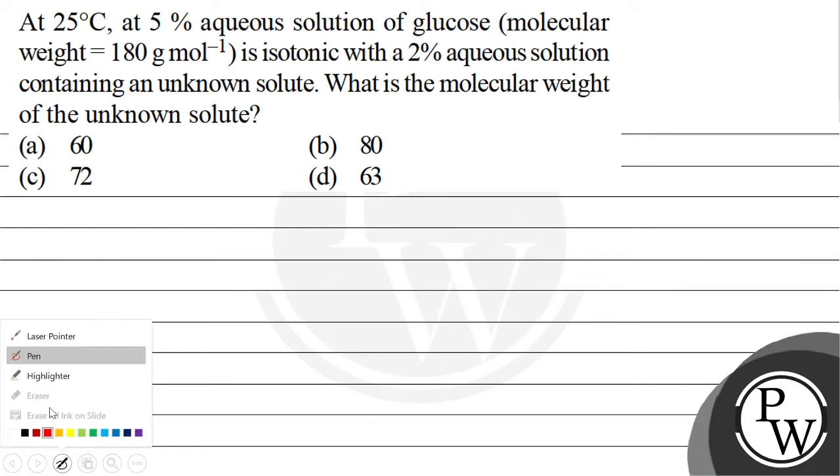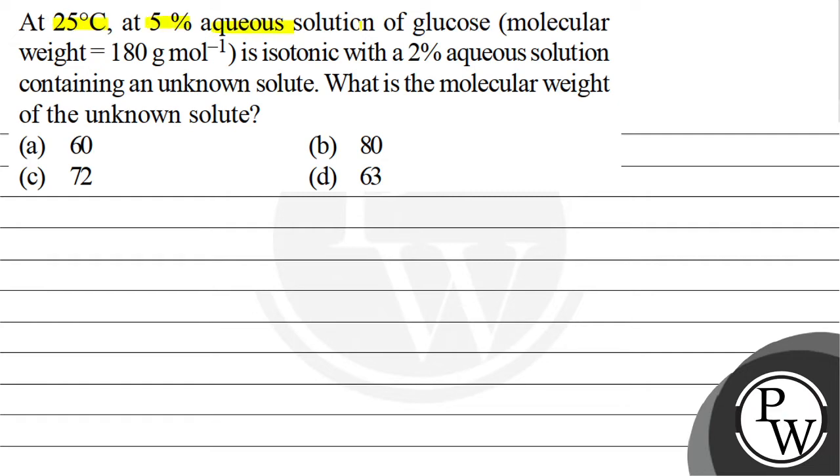Hello Bacho, let's read this question. At 25 degrees Celsius, a 5% aqueous solution of glucose with molecular weight 180 g/mol is isotonic with a 2% aqueous solution containing an unknown solute. What is the molecular weight of the unknown solute?